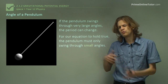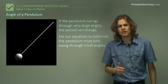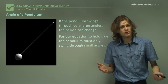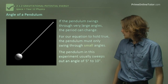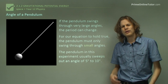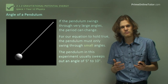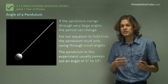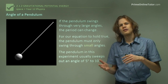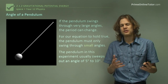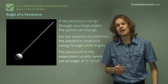We can't use, say, 45 degrees or 90 degrees. We can only use small angles between about 5 degrees and 10 degrees. If it's larger than that, we'll get inaccuracies that get larger and larger as the angle increases.